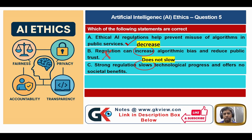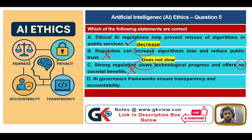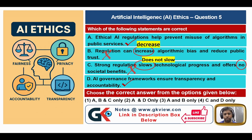Statement C: strong regulation does not show technological progress and offers no social benefits — this statement is also false. Statement D: AI governance frameworks ensure transparency and accountability — this statement is true. So A and D are true, making the correct answer option containing both A and D.